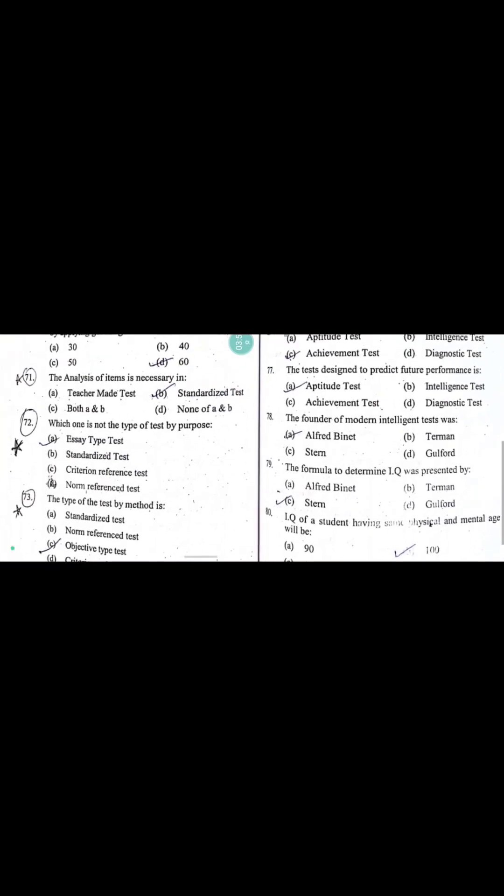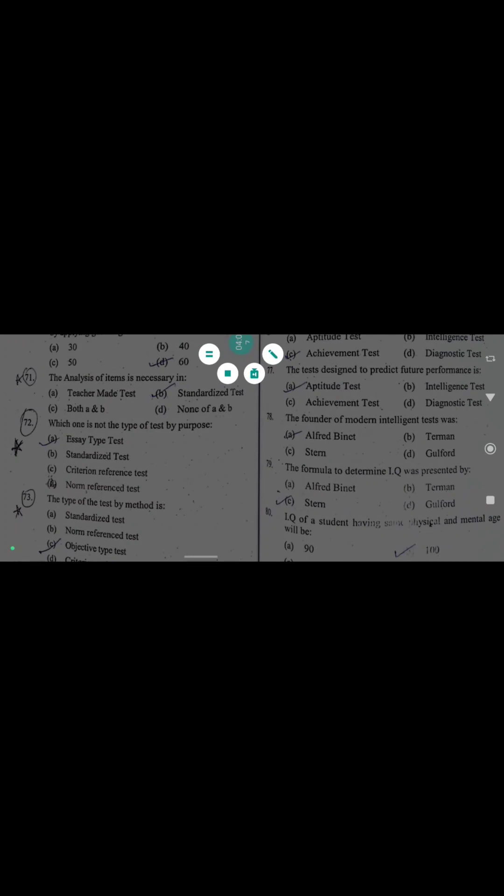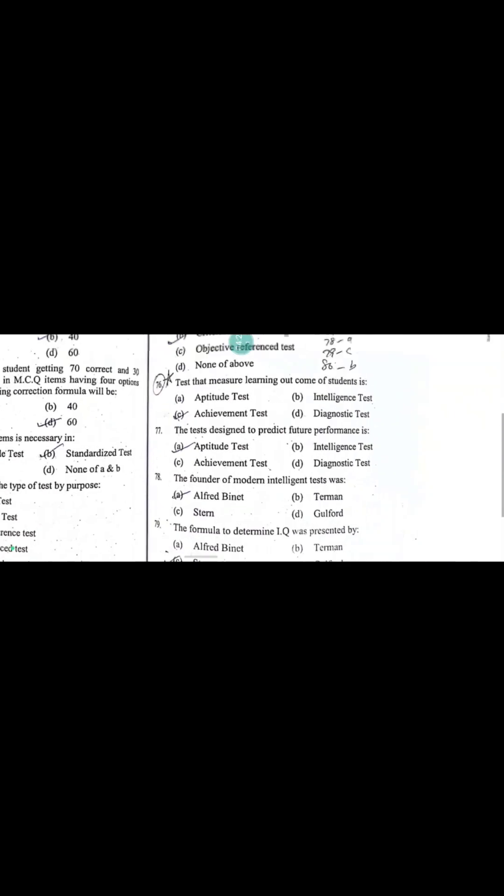The analysis of items is necessary in standardized tests. Which one is not a type of test by purpose? Objective type test is a type of test by method. When student performance is compared with other students, it's norm-referenced. When student performance is compared with clearly defined learning tasks, it's called criterion-referenced test. The test that measures learning outcomes is an achievement test. The test designed to predict future performance is an aptitude test.